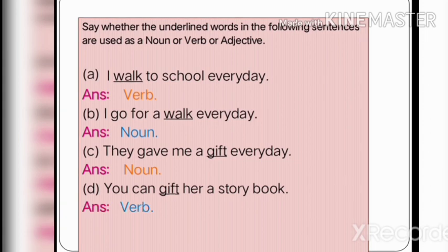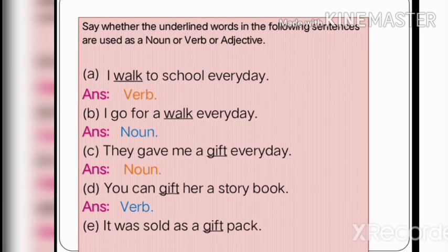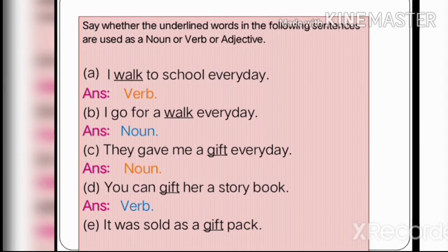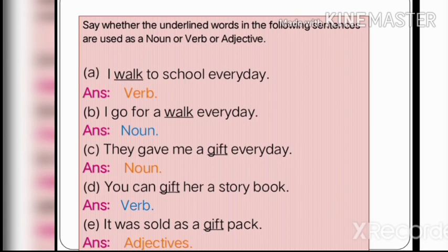Because 'gift' follows the modal verb 'can' and acts as an action word, it works as a verb. Now look at the next sentence: 'It was sold as a gift pack.' If you read carefully and understand the function of 'gift' — it is describing the word 'pack,' telling us how the pack is. It's a gift pack, so it works as an adjective.